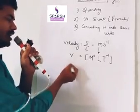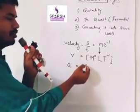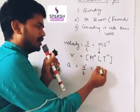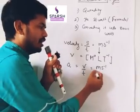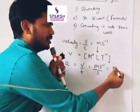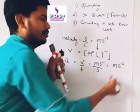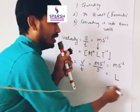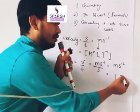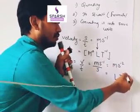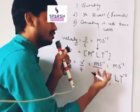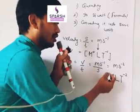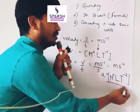Let us take more examples — acceleration. Acceleration is velocity upon time. Velocity is meter per second and time is second, so it becomes meter second to the power minus 2. Meter we write as L, second as T to the power minus 2, and since it does not involve mass, M is raised to power zero. This is the dimensional formula for acceleration.